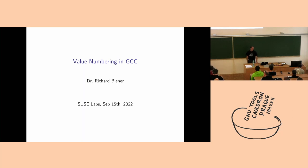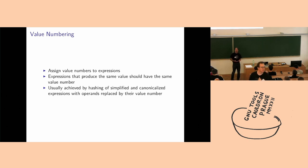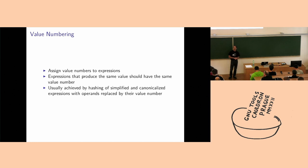I'm going to talk about value numbering in GCC, covering work I've done four or five years ago. Value numbering is the task of assigning value IDs to expressions to be able to identify multiple expressions as computing the same value. That's used, for example, in common sub-expression elimination.